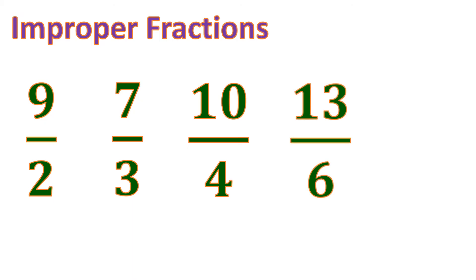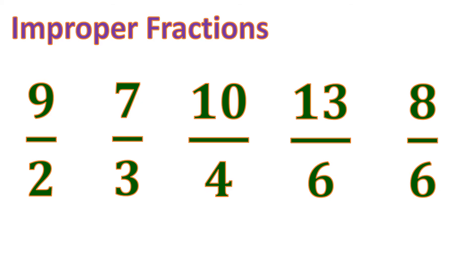Another one: thirteen-sixths, where the numerator is 13 and the denominator is six. And eight-sixths, where the numerator is eight and the denominator is six — this is an improper fraction. Just like proper fractions, improper fractions don't contain a whole number, but they can be transformed.